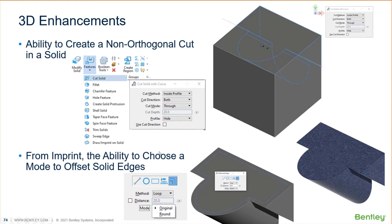For example, what you see on the screen — if that was a plain solid in an older version of MicroStation, you could do a non-orthogonal cut on it. But once you turn that solid into a feature solid by chamfering or filleting the edges, or putting a hole through it, all bets were off — you couldn't make that change to it. So now you can use a feature solid and a parametric solid.